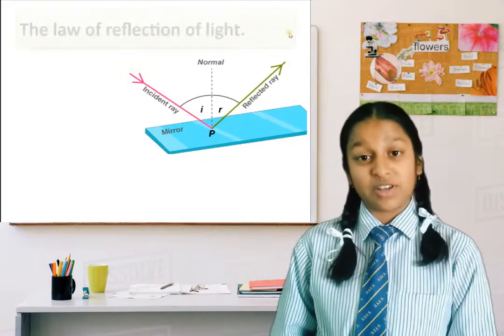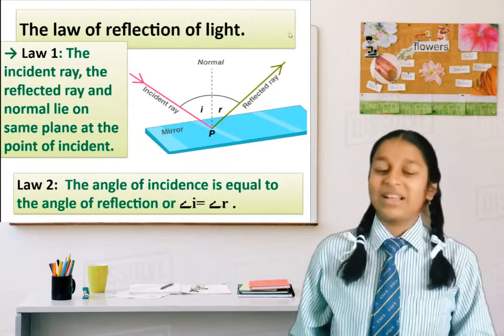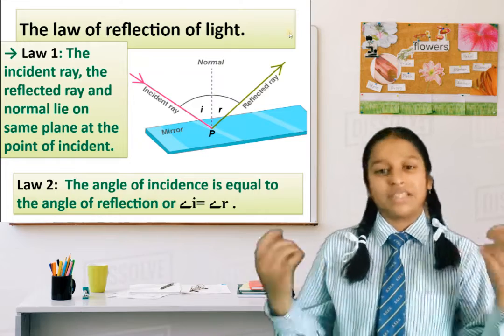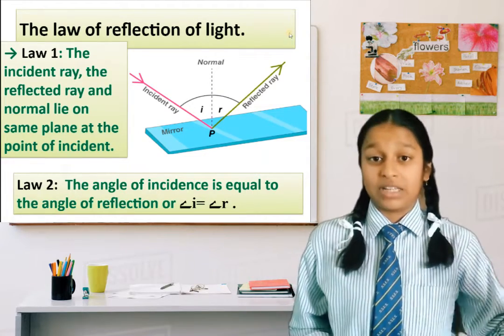There are two laws of reflection of light. One, the incident ray, the reflected ray, and normal lie on the same plane at the point of incidence. Number two, the angle of incidence and angle of reflection is equal.